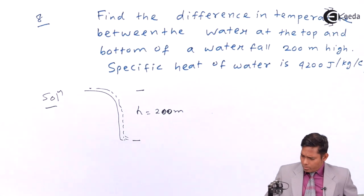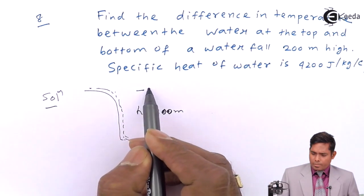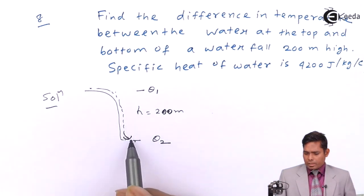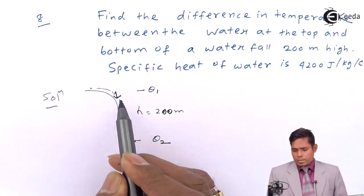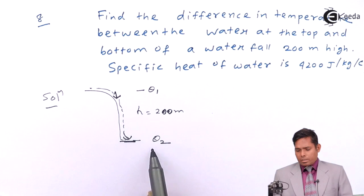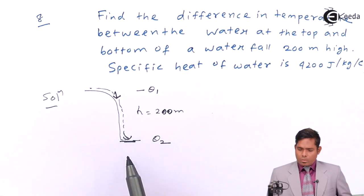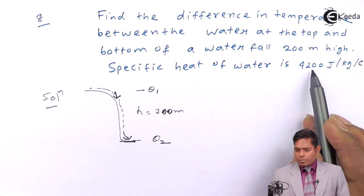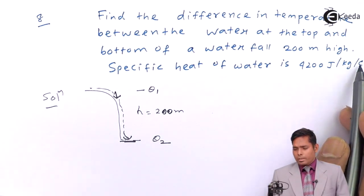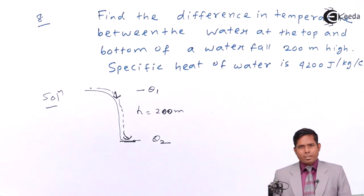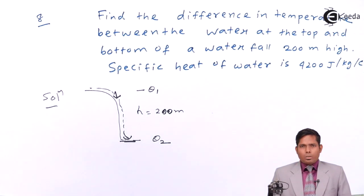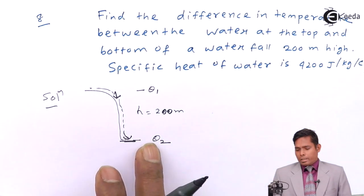I don't know the temperature at the top, so I'll call it theta1, and the temperature at the bottom when the water lands is theta2. The specific heat of water is also given as 4200 joule per kilogram per Kelvin, or per degree centigrade.